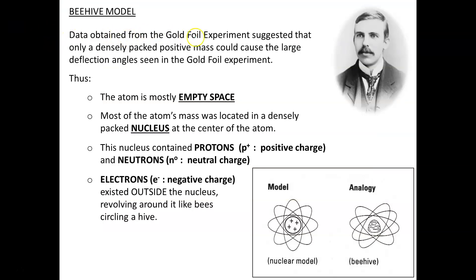So the data obtained from the gold foil experiment suggested that only a densely packed positive mass could cause the large deflection angles seen in the gold foil experiment. From this, Ernest Rutherford came up with the beehive model, saying that the atom is mostly empty space. Most of the atom's mass is located in a densely packed nucleus at the center of the atom. This nucleus contained protons, positively charged, and neutrons, neutrally charged. Meanwhile, the electrons, which are negatively charged, existed outside the nucleus, revolving around it like bees circling a hive.